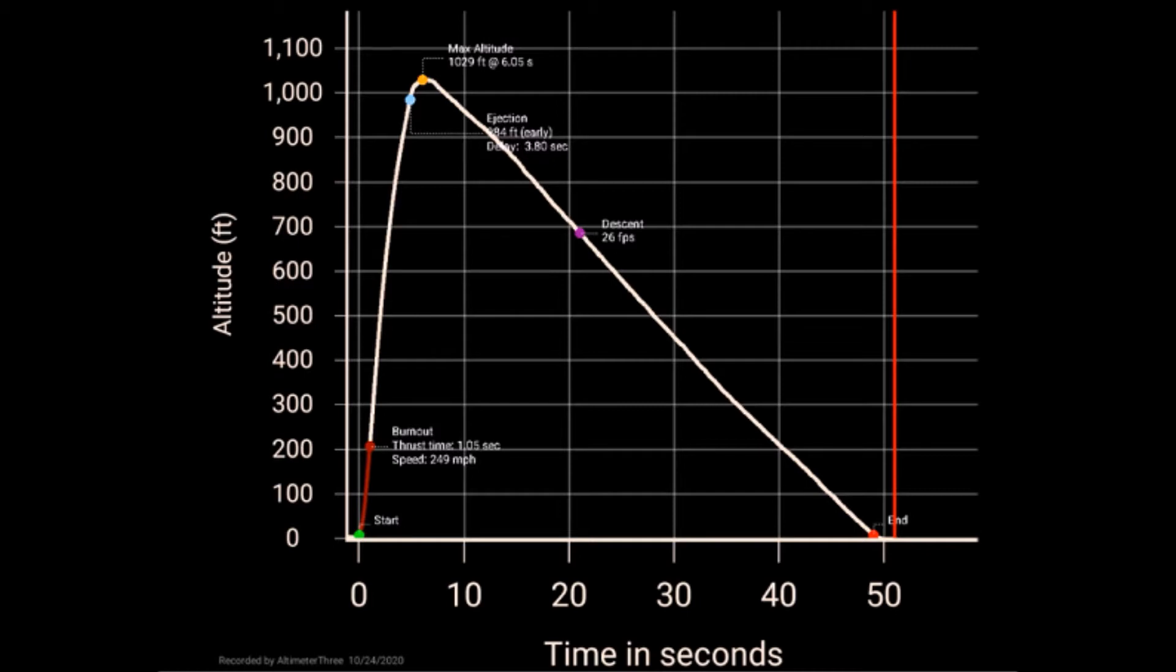I will note that the Jolly Logic Altimeter 3 detected this flight characteristic because it shows on the graph here that the parachute ejected at 984 feet before the rocket reached its max altitude at 1,029 feet, which is pretty cool.